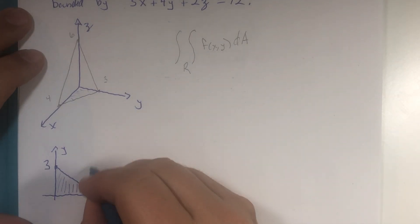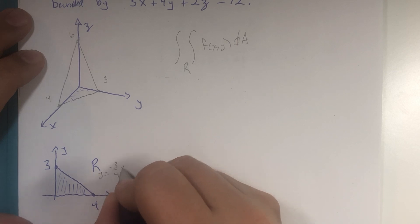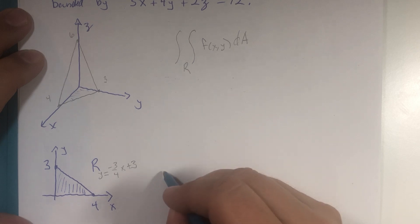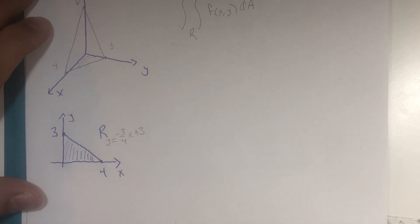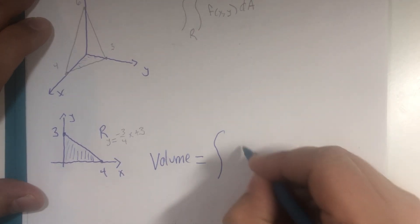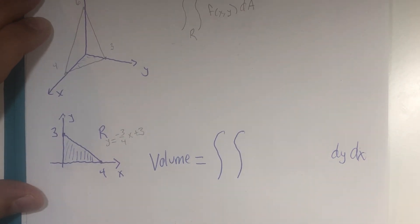That becomes our region of integration. This line that continues forever has a nice equation. Slope is down 3 and right 4, negative 3/4 x, and a y-intercept of 3. All of the necessary pieces for setting up the region of integration, integration in terms of a volume problem, dy dx. We have everything we need.